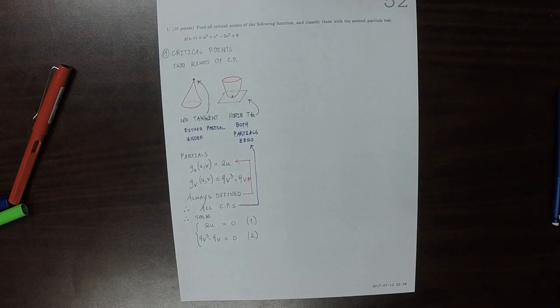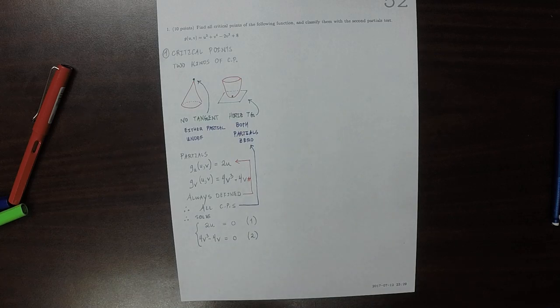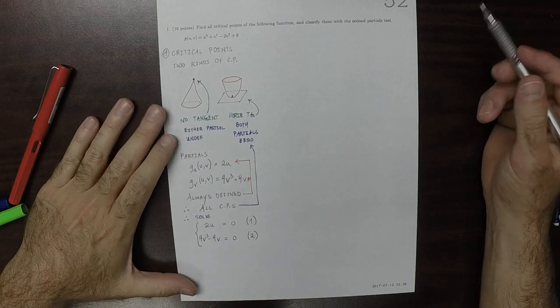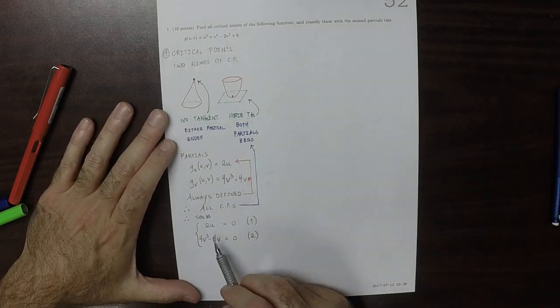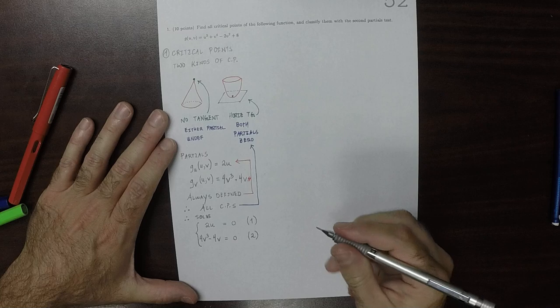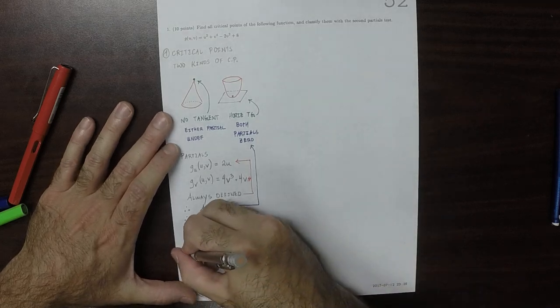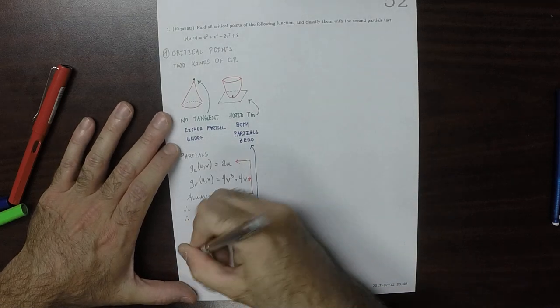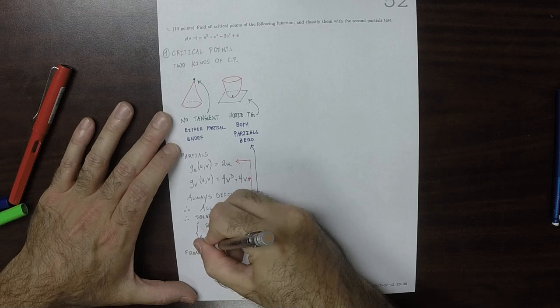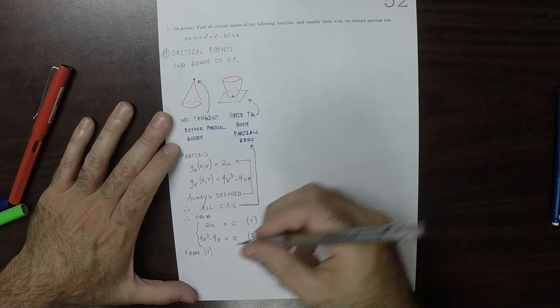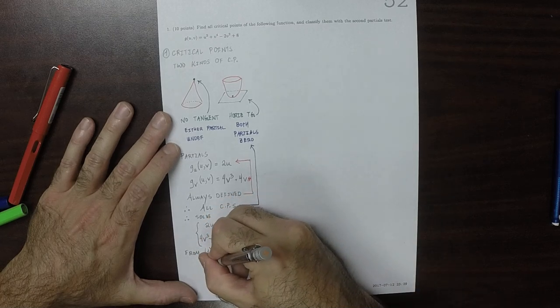Well, this system of equations is kind of interesting. In one sense, it's so easy that it's a little bit complicated, because they can literally be solved separately. So from equation one, we can see that it must be the case that U is zero.